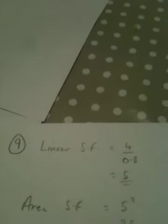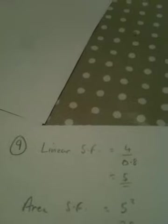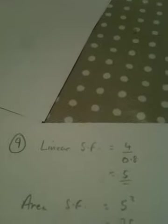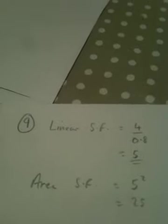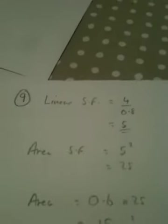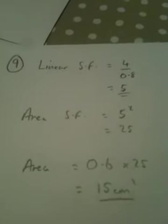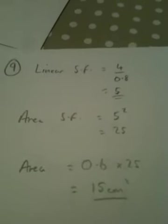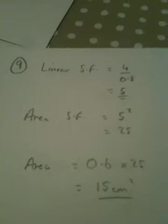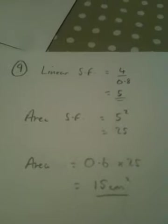Now the area scale factor will be the square of that, because it's 5 times as wide and also 5 times as high. For an area scale factor we square, so 5 squared is 25. The larger piece will have an area 25 times that of the smaller piece. So the area of the smaller piece is 0.6, multiplied by 25 is 15 centimetres squared.